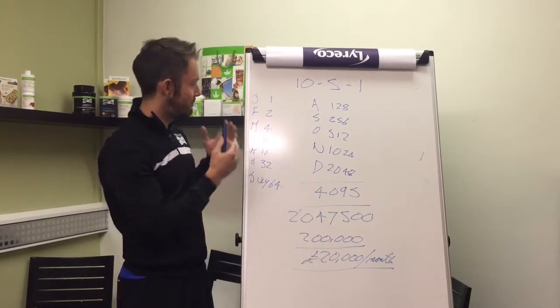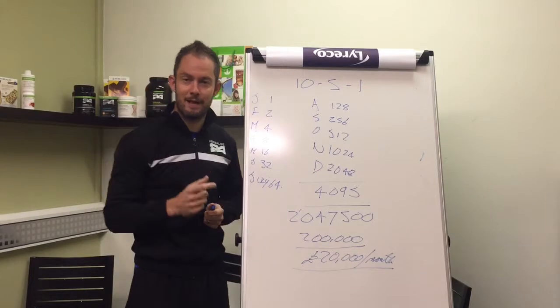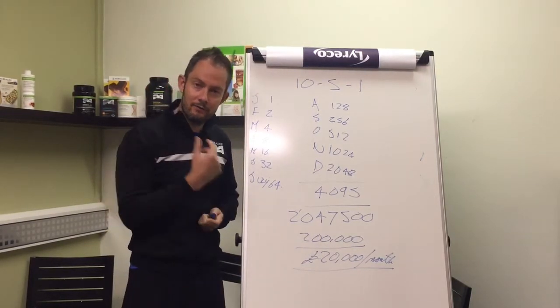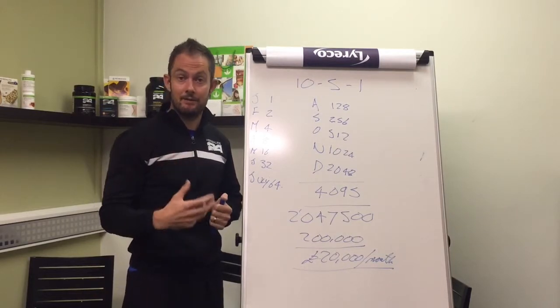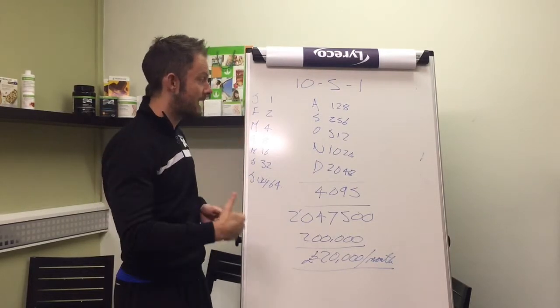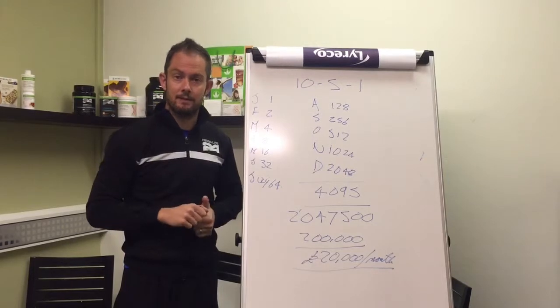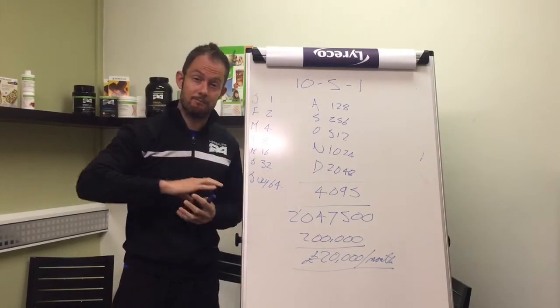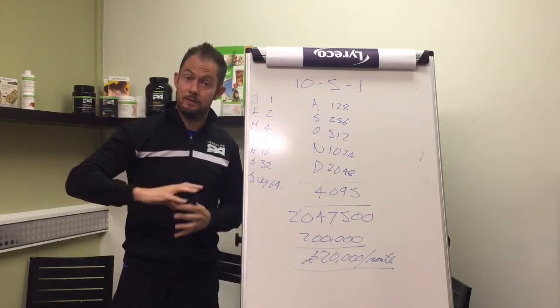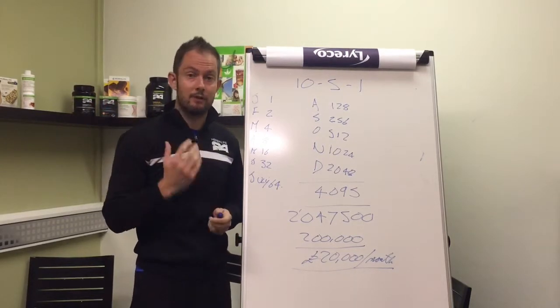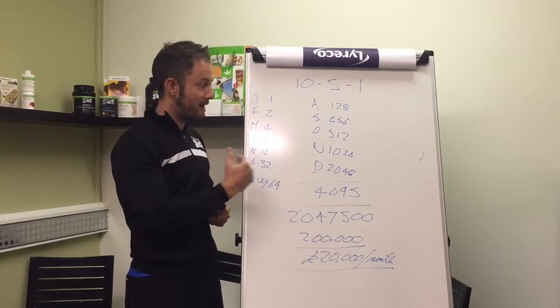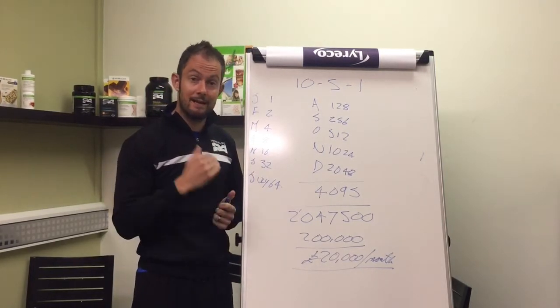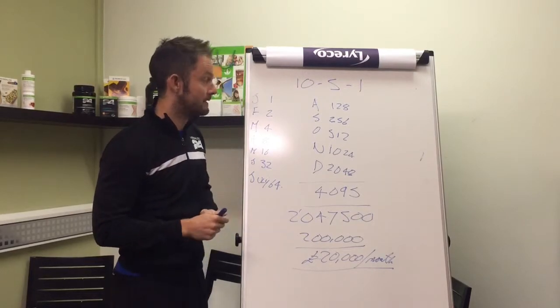Now I hope just putting down the numbers there kind of explains the power of duplication. If you can follow that system and simply teach it to the others and get other people to teach it, it shows how quickly your business can grow. There are some people just powering out there in the business and doing massive amounts of volume, massive amounts of recruiting, which is amazing, awesome if you can do that, great. But the power of network marketing comes through that duplicatable model, keep it super simple and getting other people to follow that model.